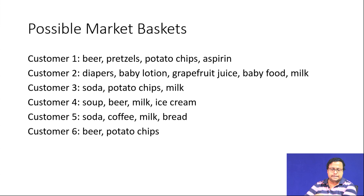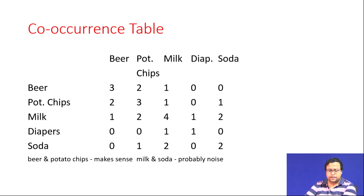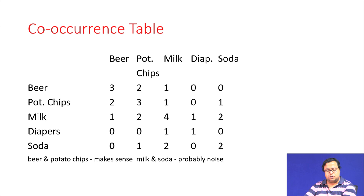Looking at a small example transaction dataset: every time beer was bought, beer and potato chips occurred together in two out of six transactions; beer and milk occurred together once; soda and milk occurred together twice. The most common product is milk, appearing in four transactions. Beer and potato chips make intuitive sense, but milk and soda coming together probably has no underlying meaning — it may just be noise, and identifying such noise is also part of the analysis.